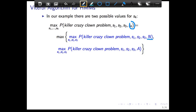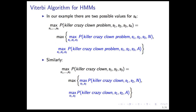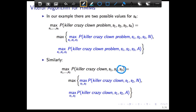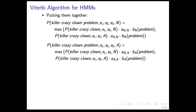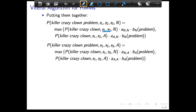If you assign s4 to N, and you've already solved it for s1, s2, s3, then you're just taking the max over the two possibilities N or A, and that solves the problem. We can do that also for the sub-string killer, crazy, clown: take s3, which can either be N or A, take the max over those two, getting the max assignment for s3. So recursively, assuming s1 and s2 are done, we pick for s3 either N or A.